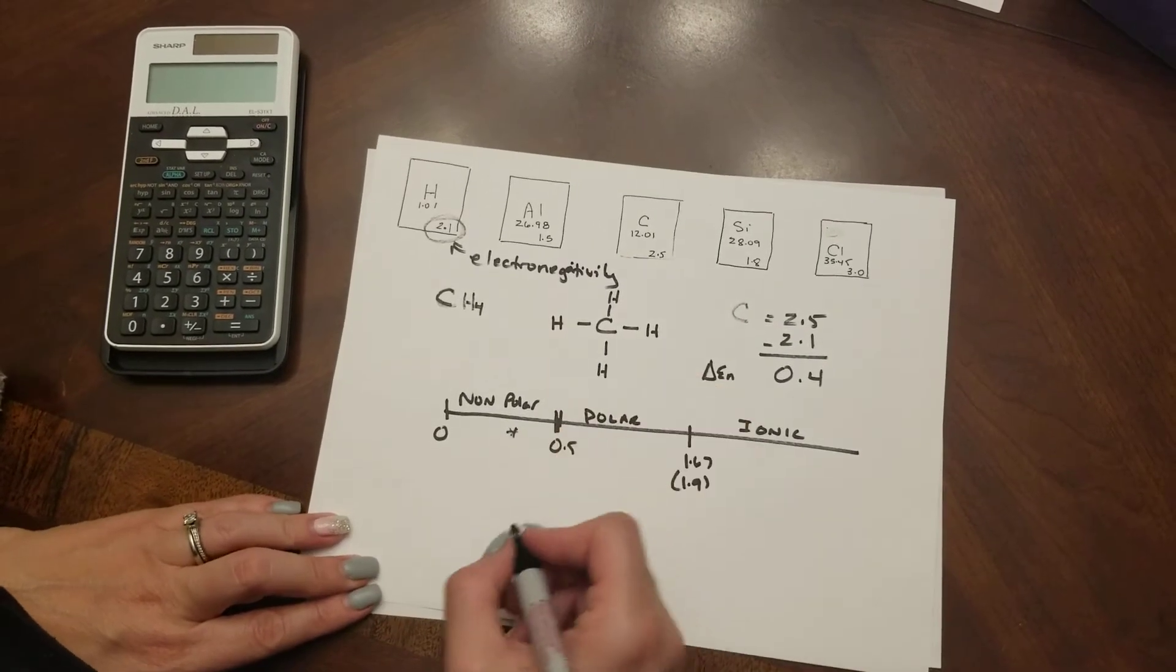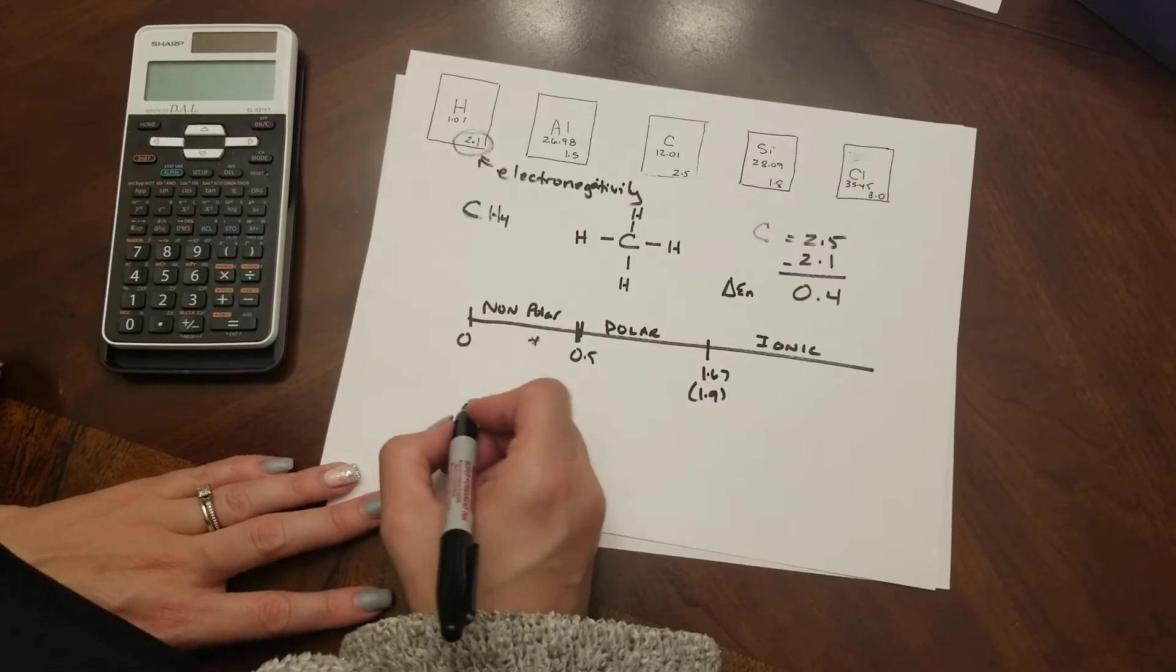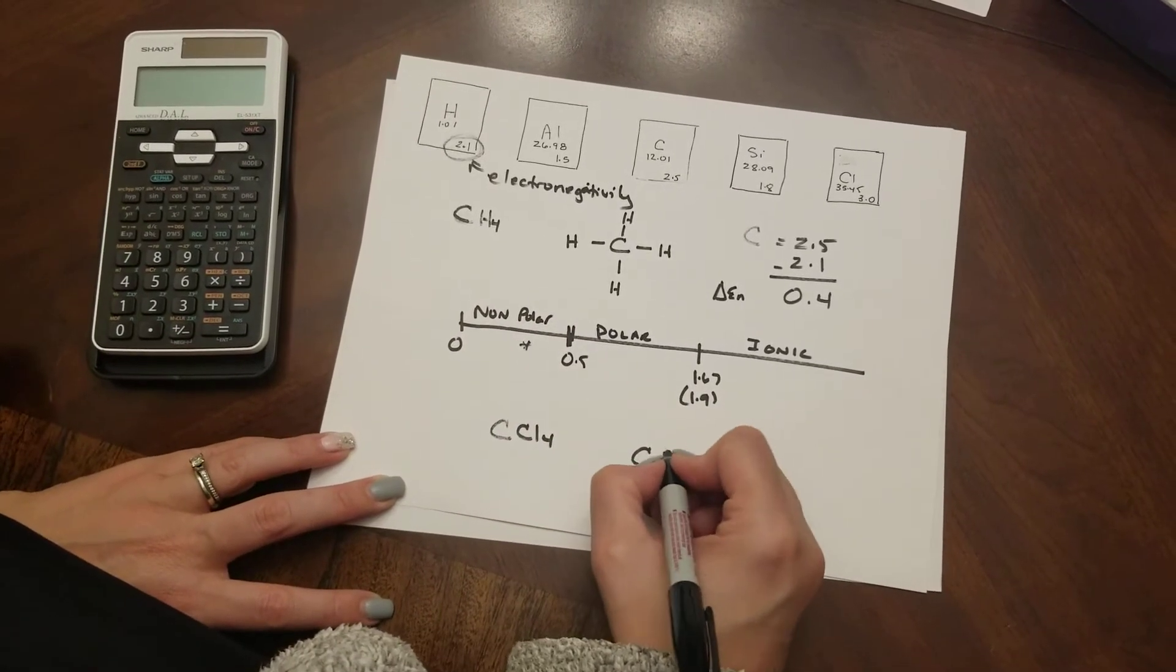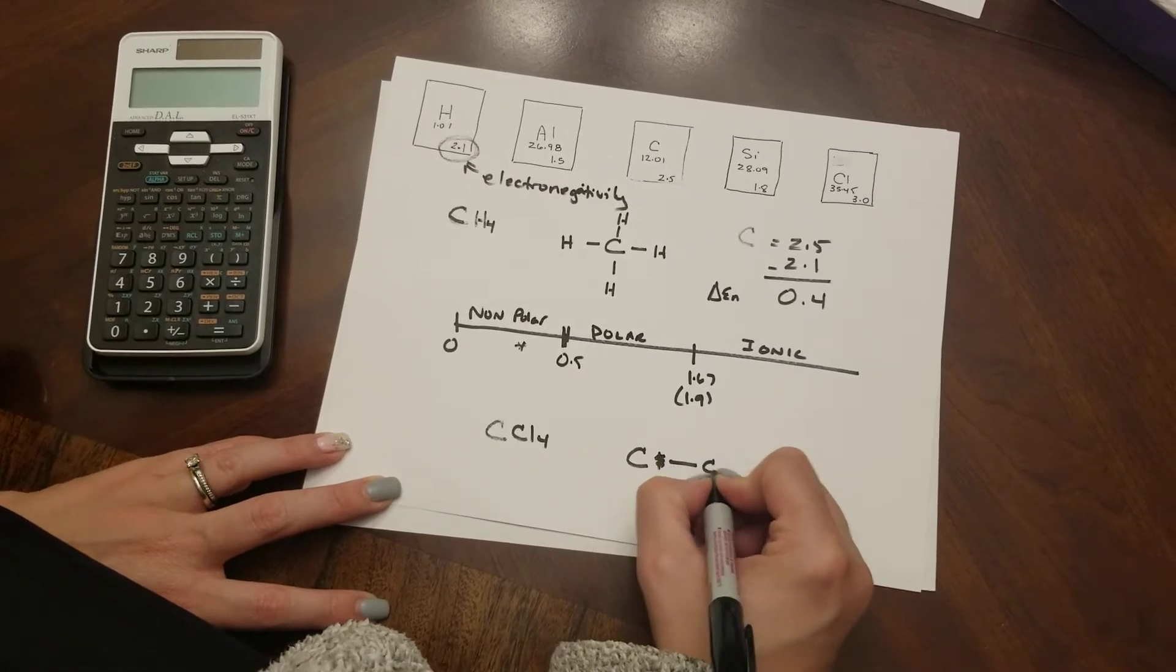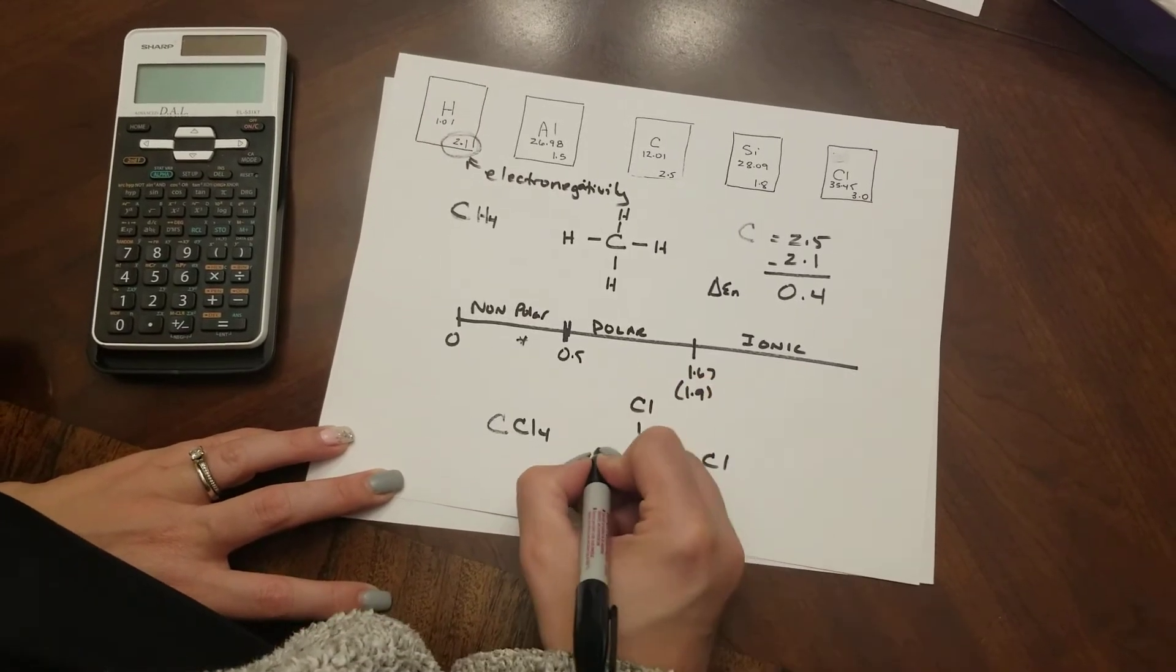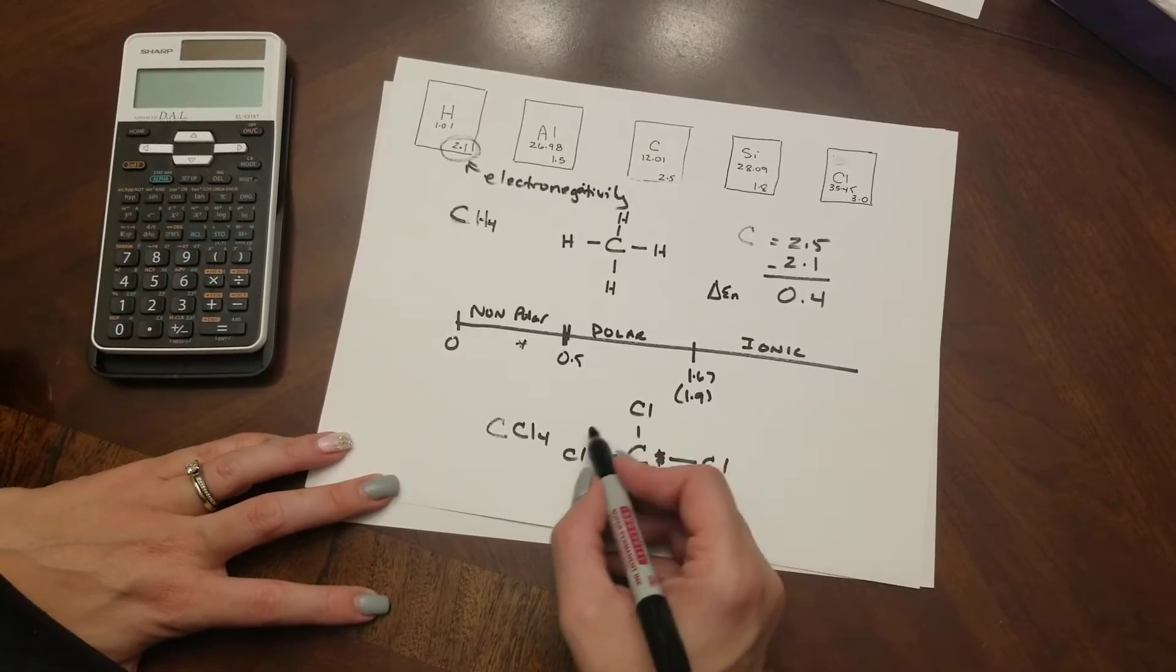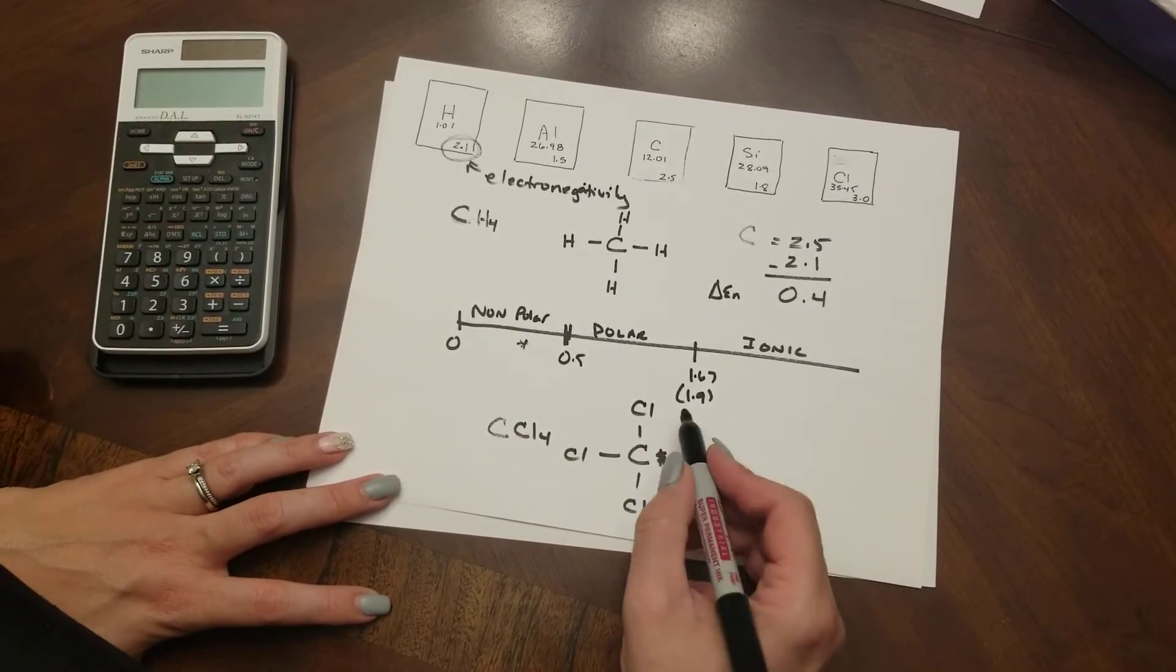If for example I were to have done carbon tetrachloride CCl4 again the shape of the molecule has four chlorines evenly spaced around the carbon. So there's four different bonds here but they're all carbon chlorine bonds.